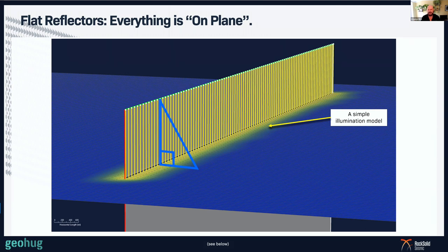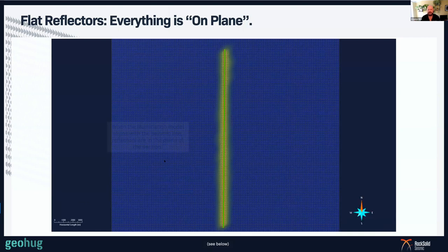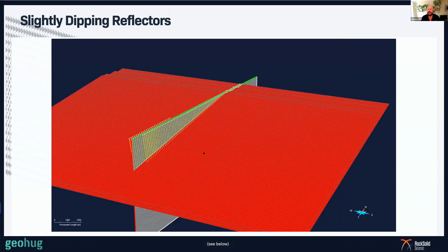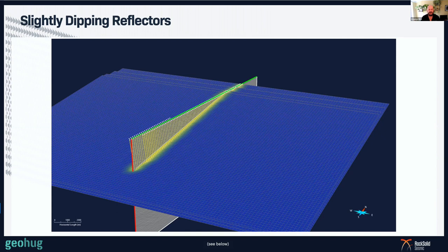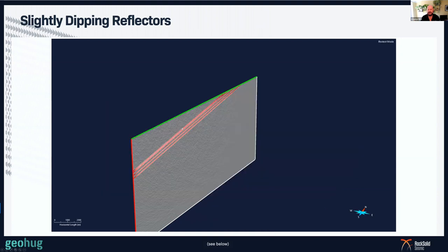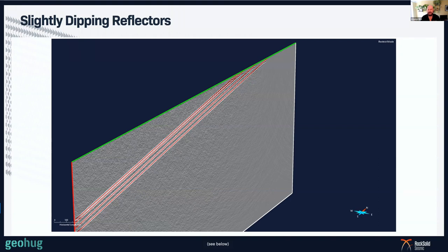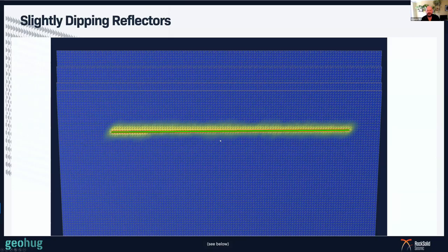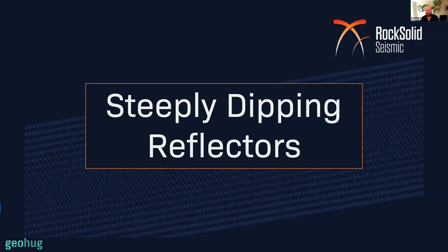When the illumination model aligns with the seismic line itself, we can say the reflectors are in the plane of the section — these are in-plane reflectors. In slightly dipping reflectors in the dip direction, the illumination model still lines up with the seismic data. But if we go across in the strike direction, the illumination model starts to differ from the location of the seismic line itself. Steeply dipping reflectors illustrate this even more clearly.